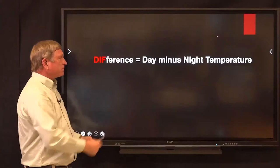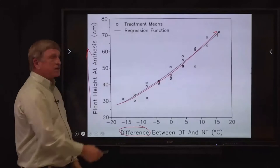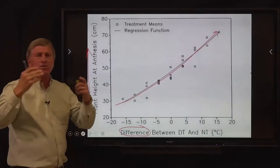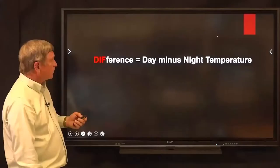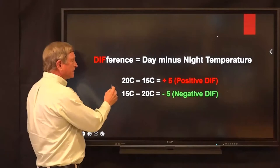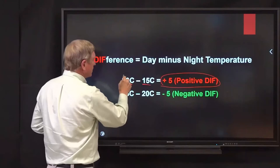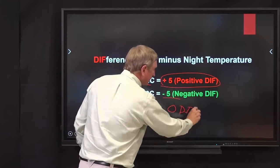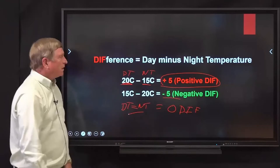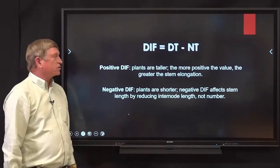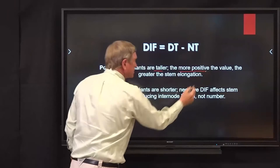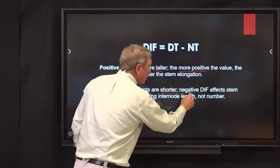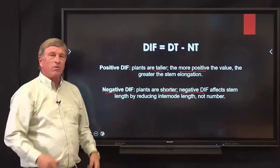He coined the term DIF for 'difference' — the relationship of day minus night temperature. As we increase day temperature relative to night temperature, we get more stem elongation. Positive DIF is defined as when day temperature is greater than night temperature. Negative DIF is the opposite — day temperature is cooler than night temperature. Zero DIF is when day equals night temperature. Conclusions: positive DIF means taller plants; the more positive, the greater the stem elongation. Negative DIF means shorter plants; the more negative the DIF, the shorter the plants — due to a reduction in internode length, not internode number.